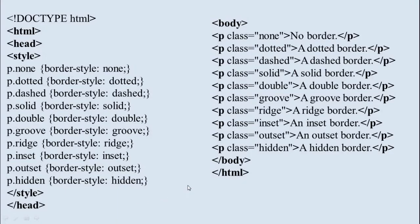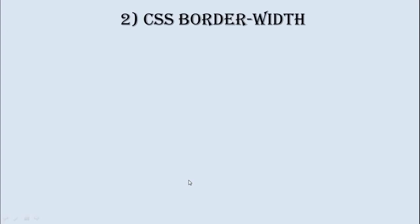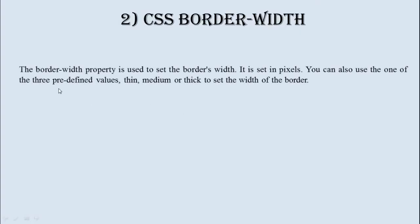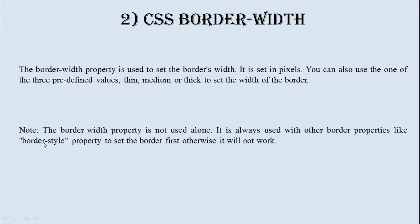Next topic is CSS border-width. You can see the borders here and the border width. It is set in pixels. You can also use one of the three predefined values — thin, medium, or thick — to set the width of the border. Note: the border-width property is not used alone; it is always used with other border properties like border-style. You must set the border first, otherwise it will not work.